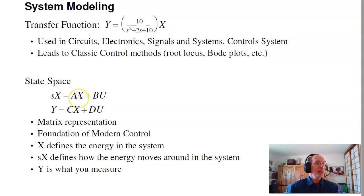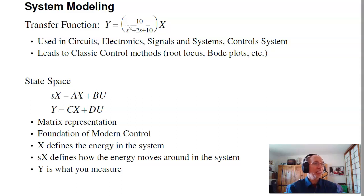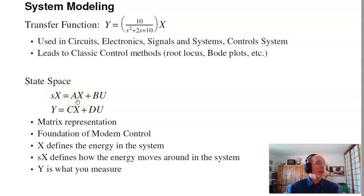Here, x defines the energy in the system. For example, if you have a circuit, it's the current through the inductors and voltages across capacitors. If you have a mass-spring system, that defines the position and velocity for potential energy and kinetic energy. x-dot is how the energy changes — basically how the energy moves throughout the system. If I know what the energy is and how it flows, I know the dynamics. Y is the output — of all the energy states, how do they contribute to the output? And D — sometimes the output is directly related to the input. That's your D matrix.